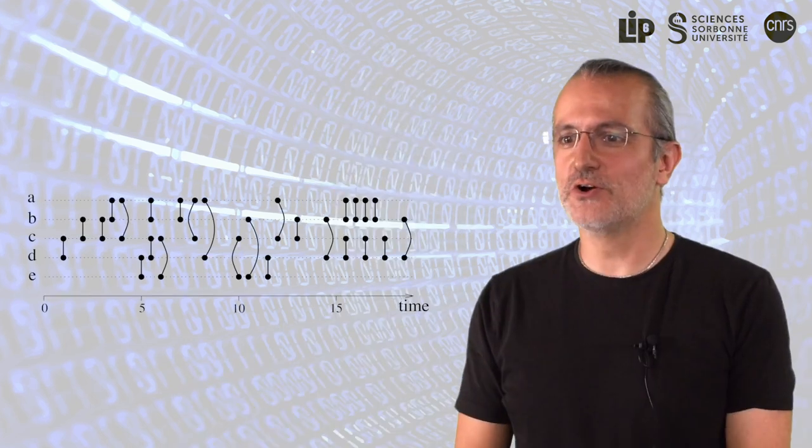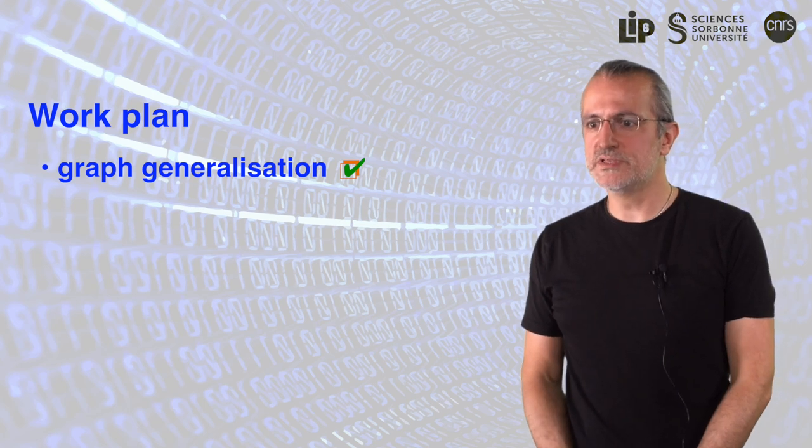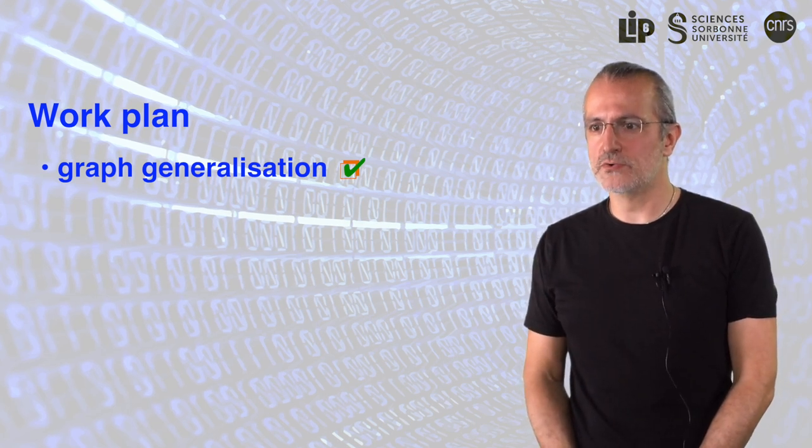This is clearly out of reach of previous approaches. This is only a beginning though. Much remains to be done to build a complete link stream theory and I want to leverage it to drastically improve anomaly detection. More precisely, I already conducted most of the graph theory generalization.